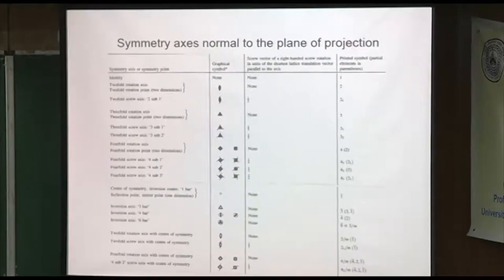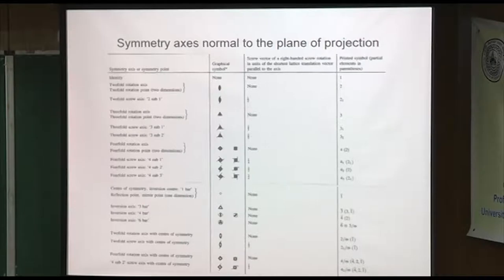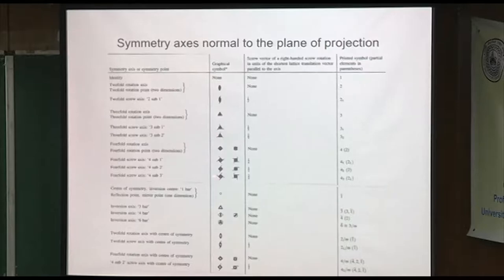Let's look at some conventions in the International Tables. The two-fold rotation axis looks like this, but if it's a screw axis, you add little squiggles at top and bottom. A three-fold rotation starts with a triangle — you're looking down the rotation axis coming out toward you. These are the symmetry axes normal to the plane of projection. A four-fold rotation axis with a center of symmetry is a diamond-shaped thing with an open circle in the middle.